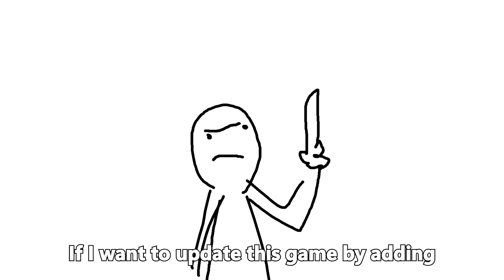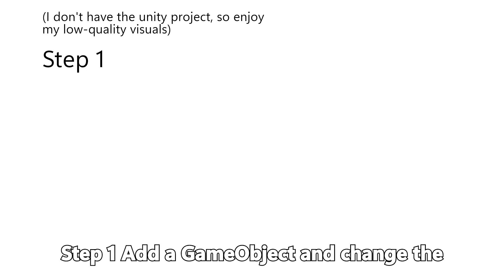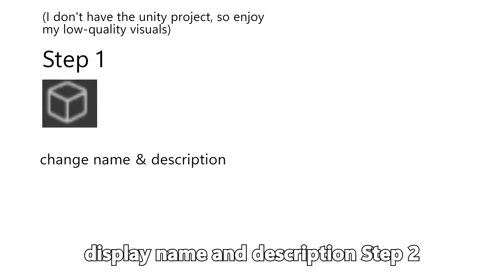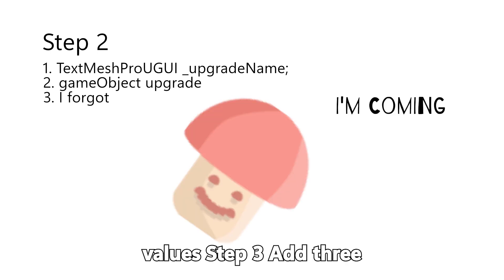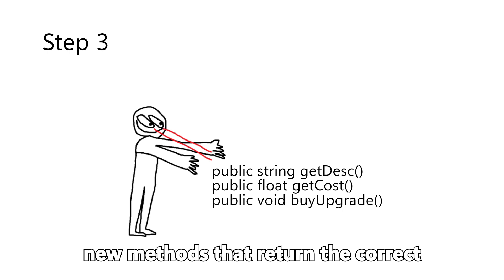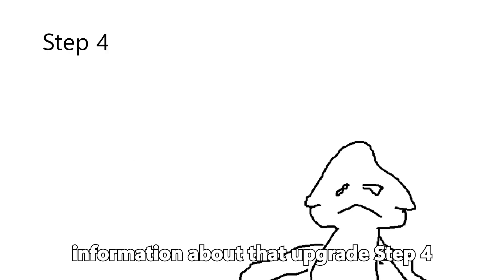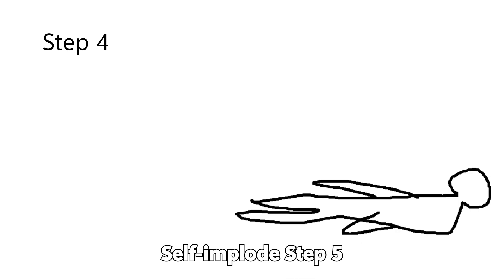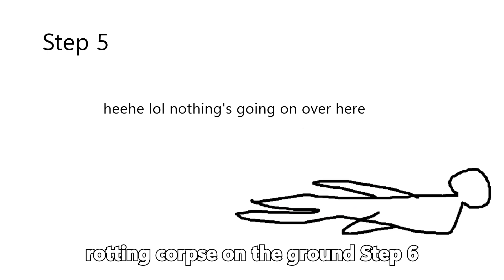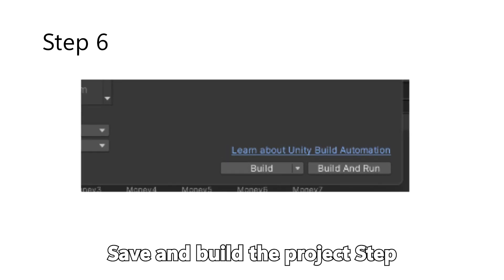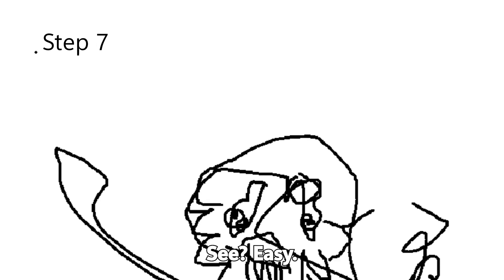If I want to update this game by adding an upgrade, here are the steps required. Step 1: Add a game object and change the display name and description. Step 2: Add 3 variables that hold those values. Step 3: Add 3 new methods that return the correct information about that upgrade. Step 4: Self-implode. Step 5: Reincarnate as a polecat and clean up the rotting corpse on the ground. Step 6: Save and build the project. Step 7: Faint of exhaustion. See. Easy.